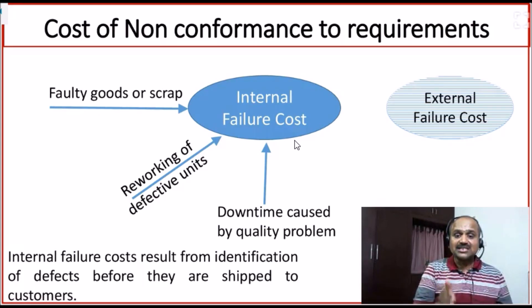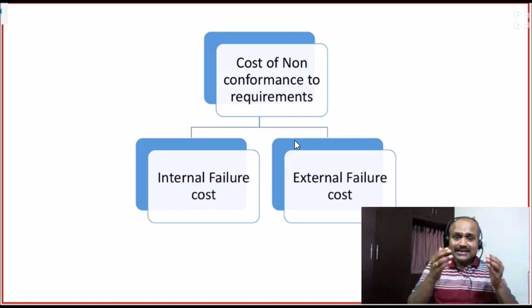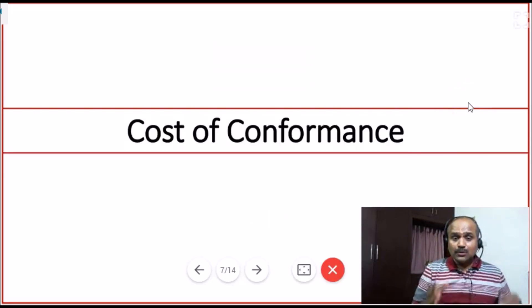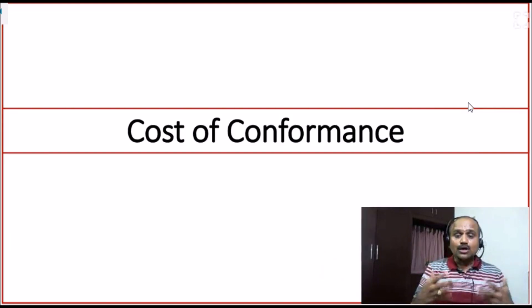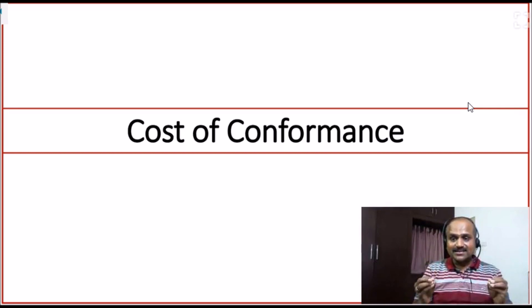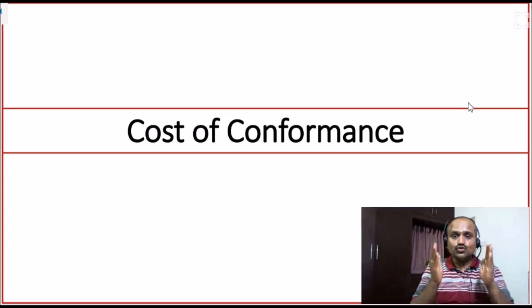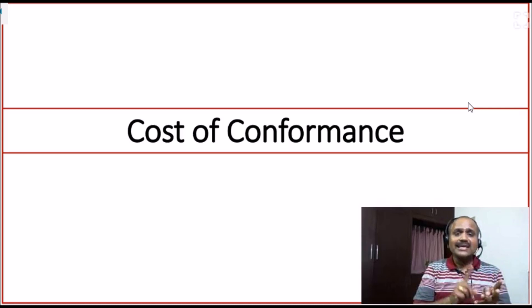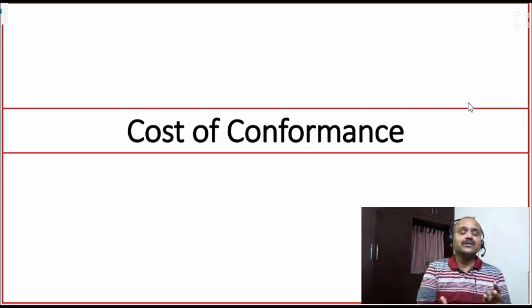Internal failure cost results from identification of defects before they are shipped to customers. Both internal failure cost and external failure cost are the result of non-conformance to requirements. Now we have to learn cost of conformance. So far, I have not used the word quality at all. The only thing I said is cost of non-conformance — that means customer has stated certain requirements, and if we do not conform to those requirements, we will incur either internal failure cost or external failure cost. We need to have a mechanism of conforming to the stated requirements.